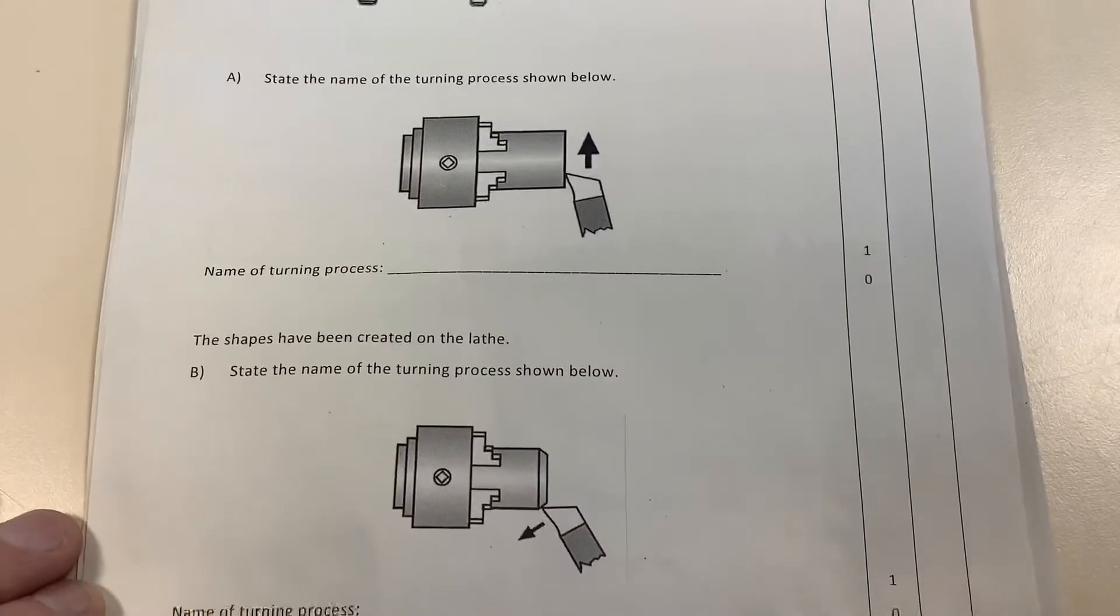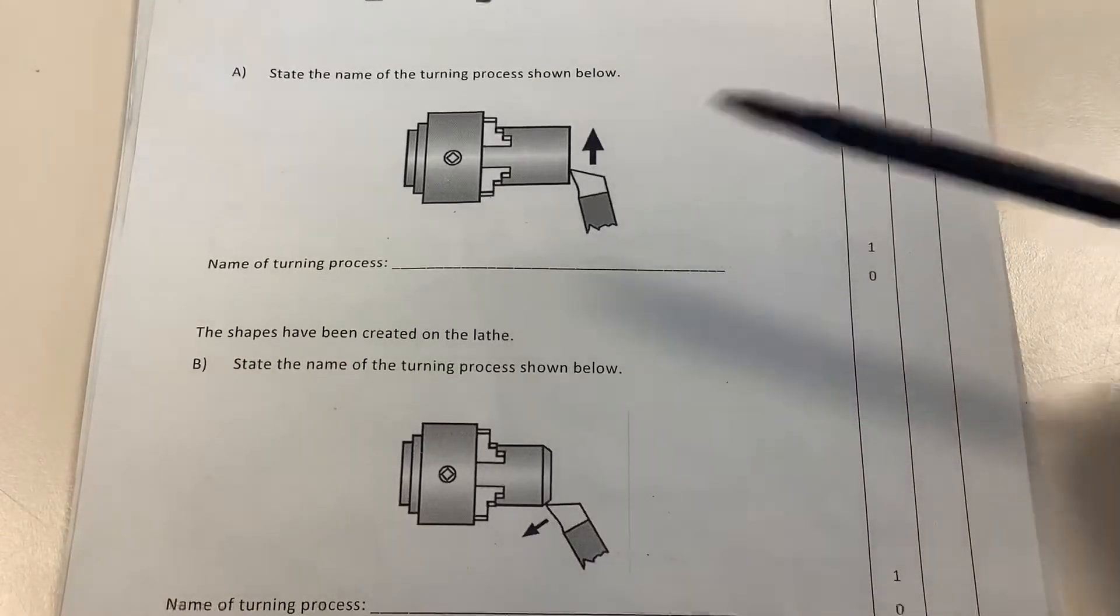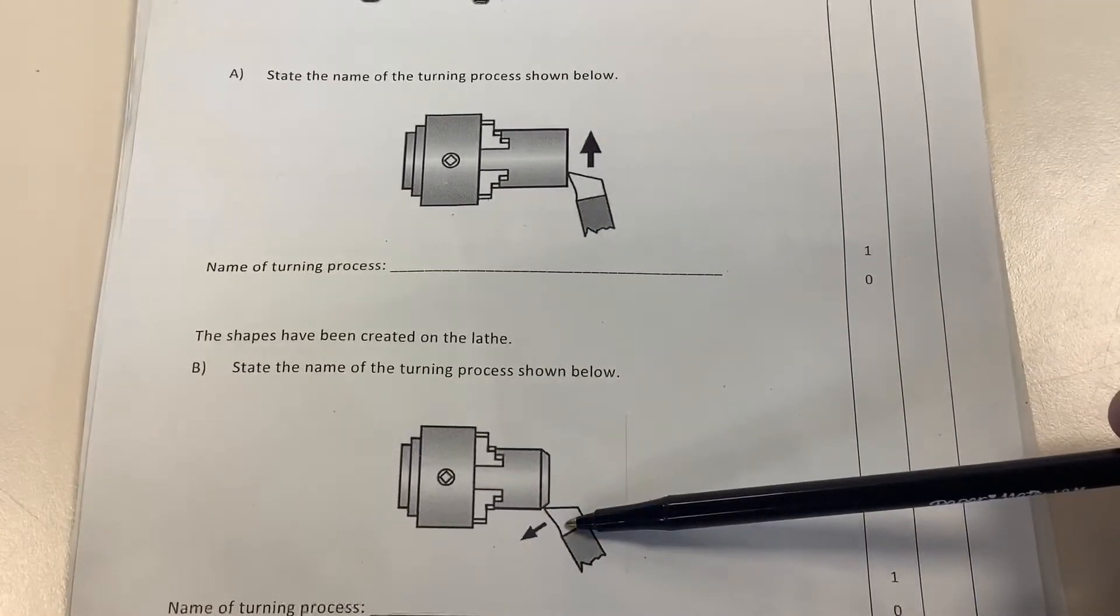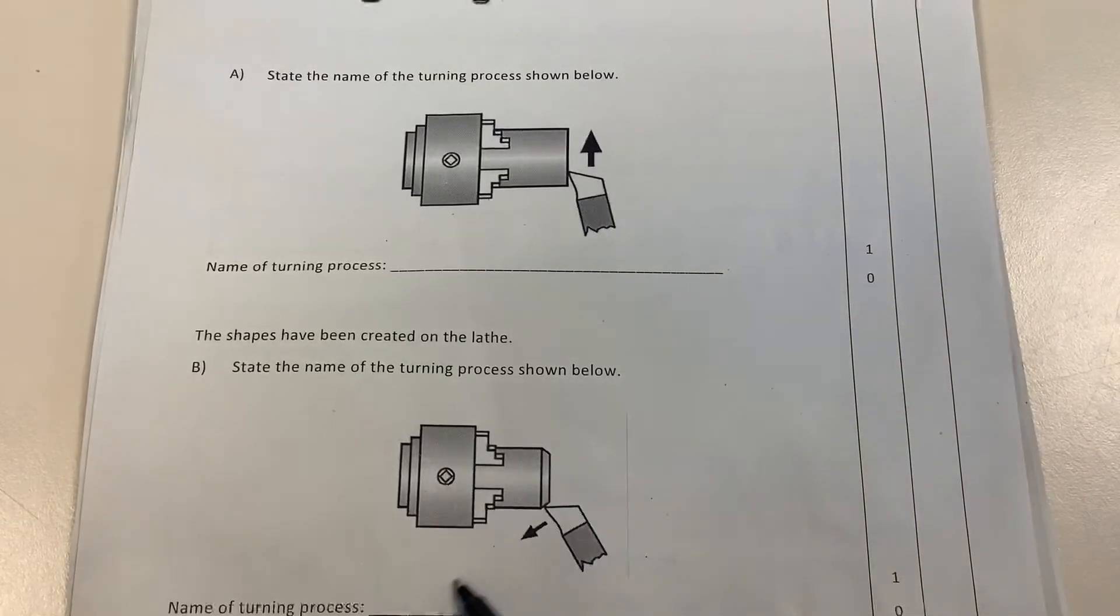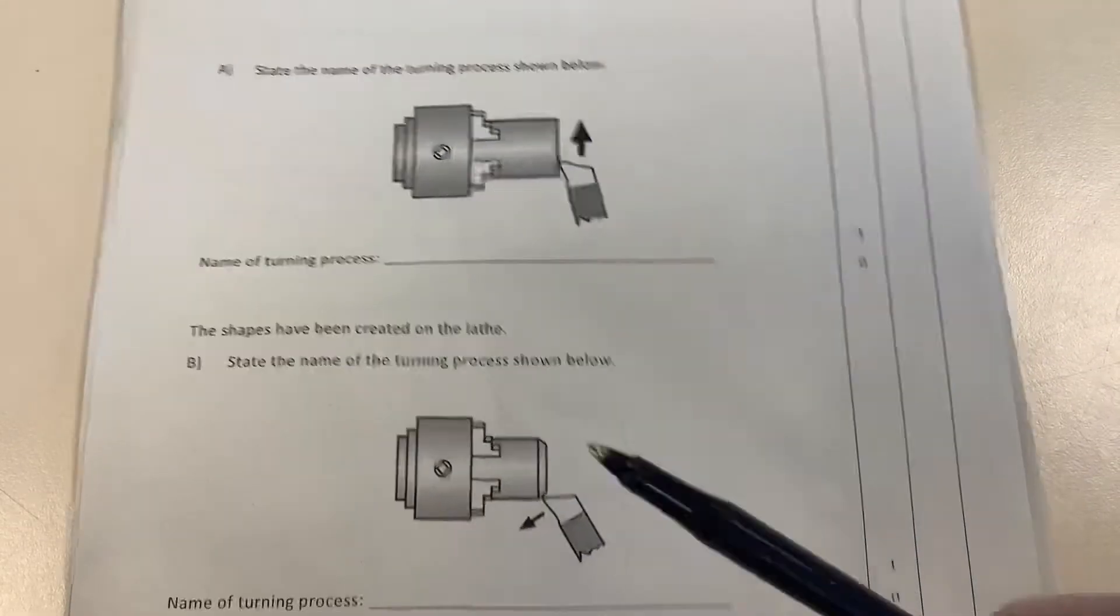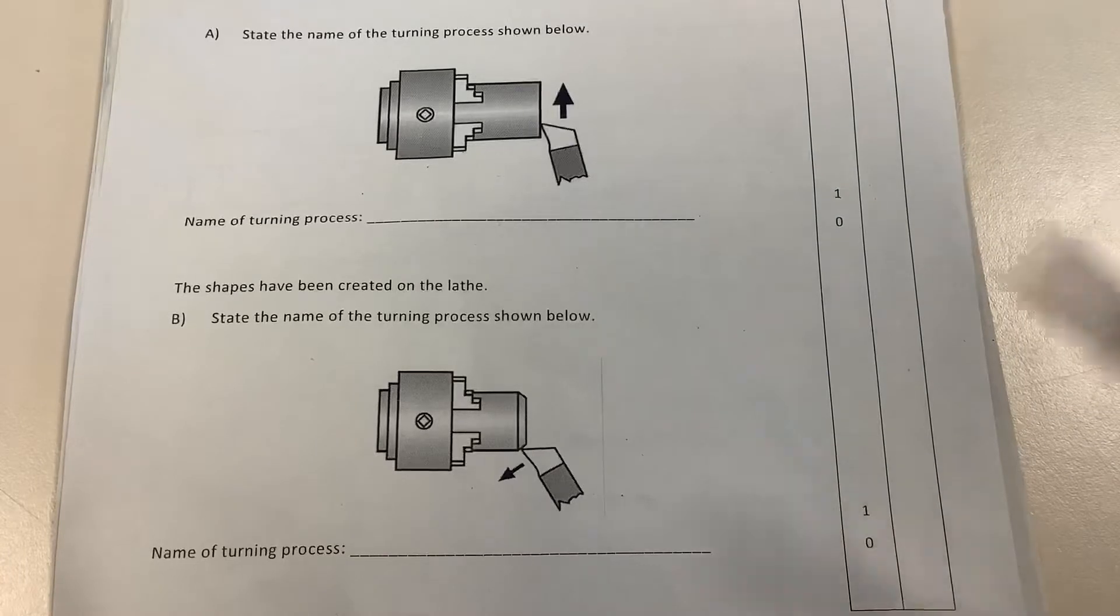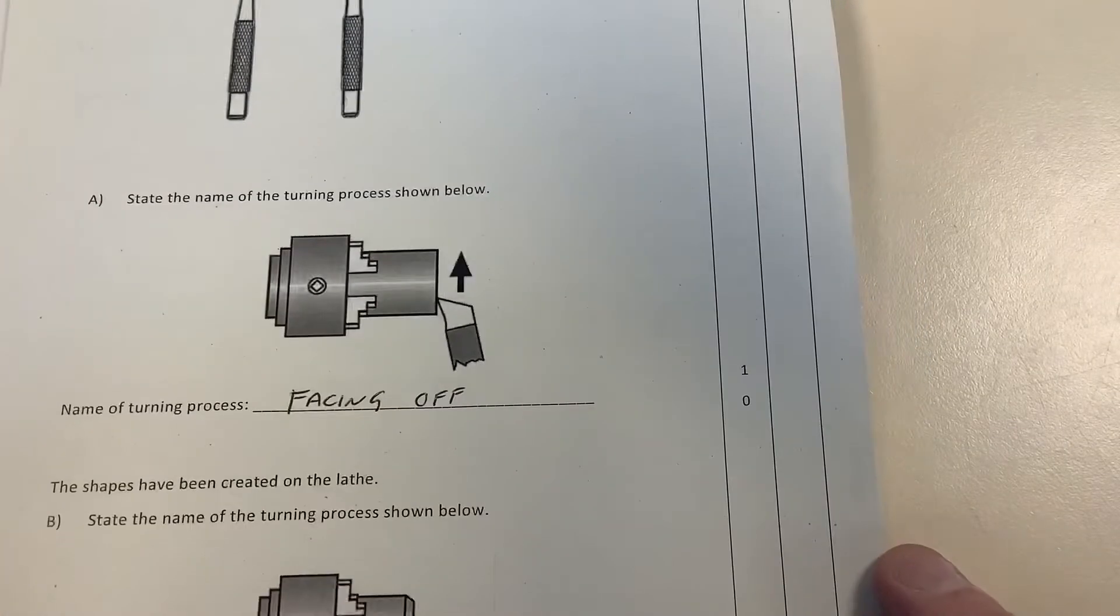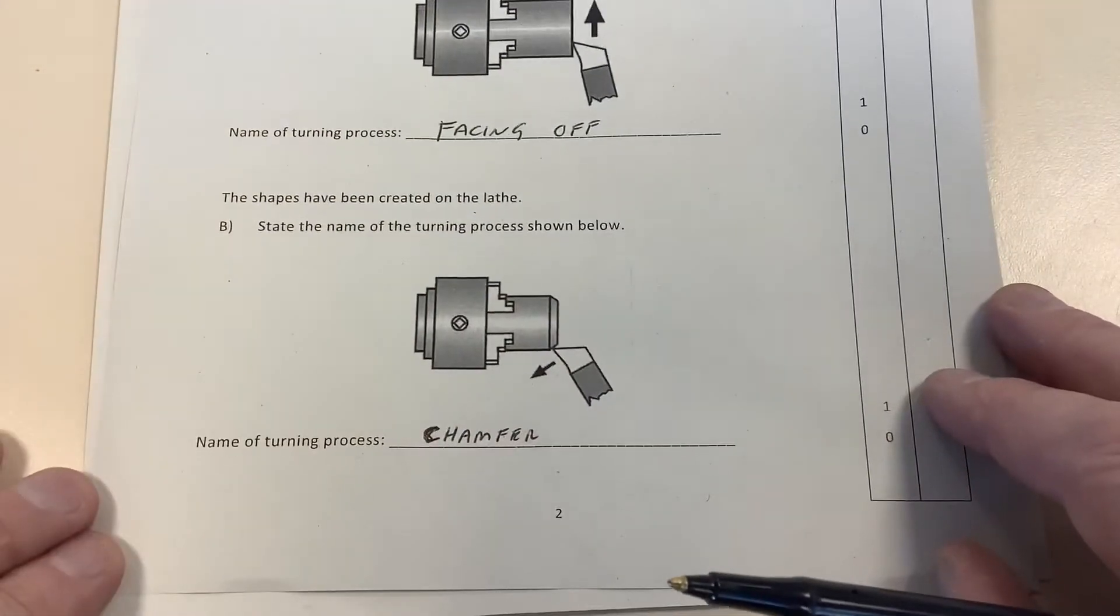Now the next one down below, again this is the chuck, this is your material, and there's your cutter set at an angle. The process is coming across this way, so naming this process, again one mark, would be facing off—sorry, chamfering. So that's the two answers: facing off and chamfering.